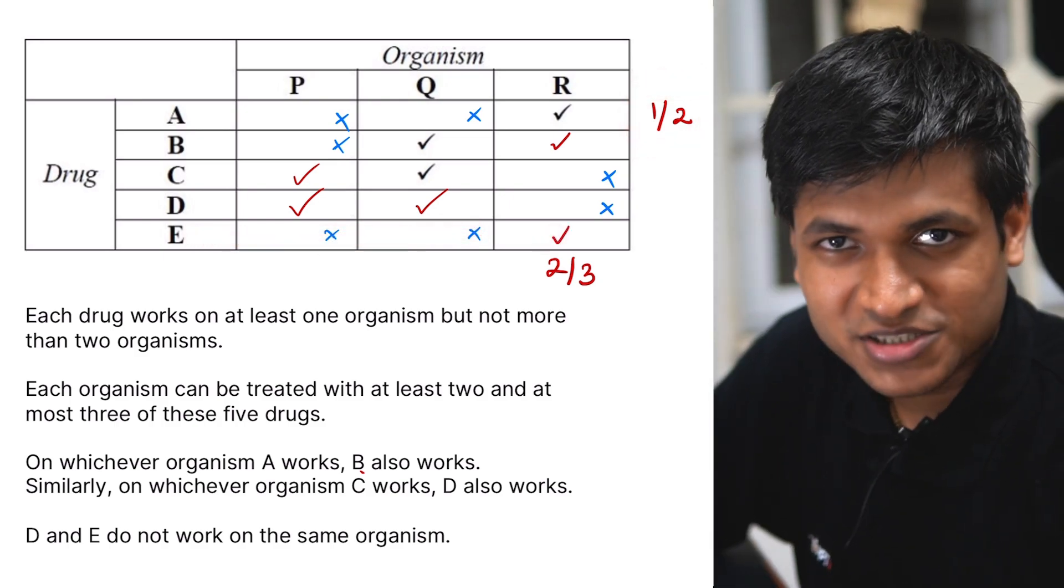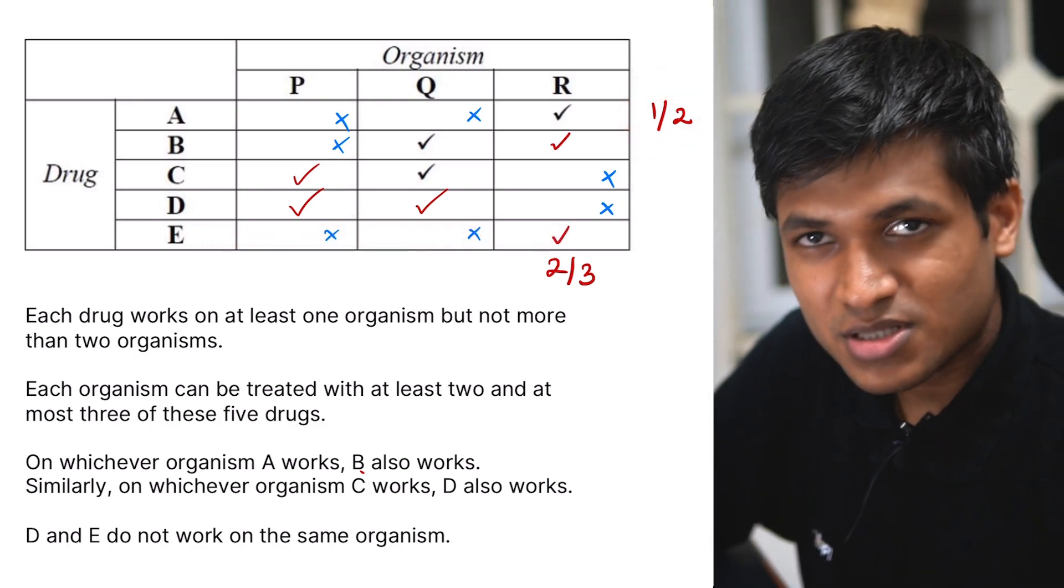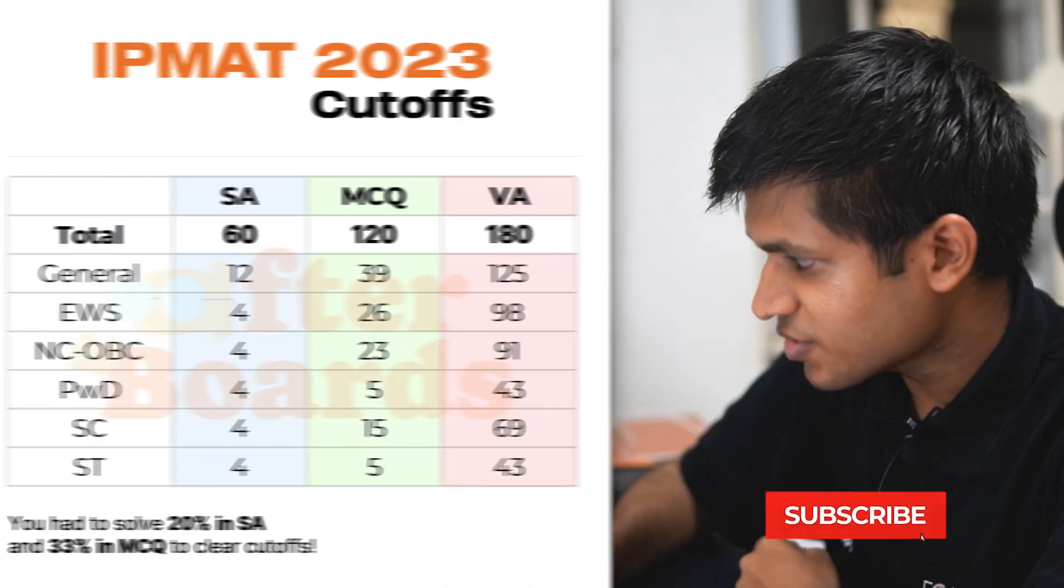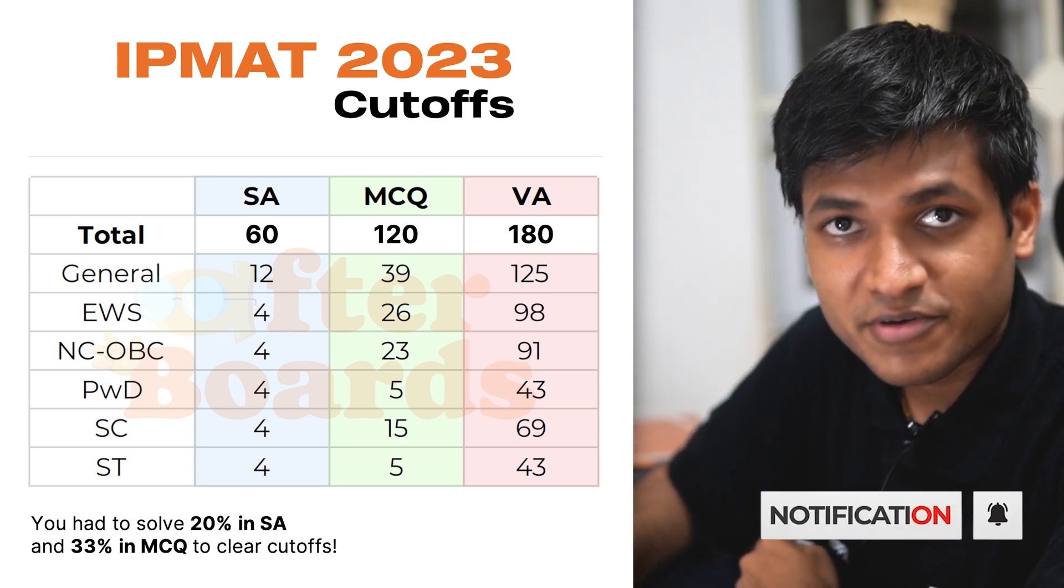There are five questions. You'll be able to solve all of them now that you have this data. And this question is easily solvable in two to five minutes. Last year, the MCQ cutoff for general students was 39, and this has given you 20 marks, which is almost 50% of your marks required to clear the cutoff.